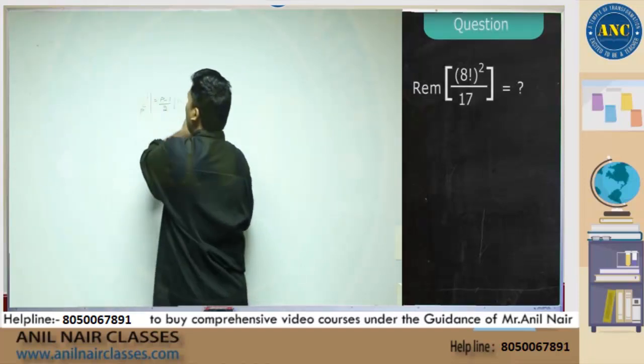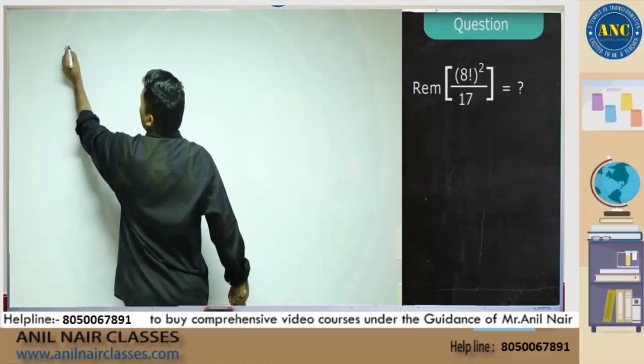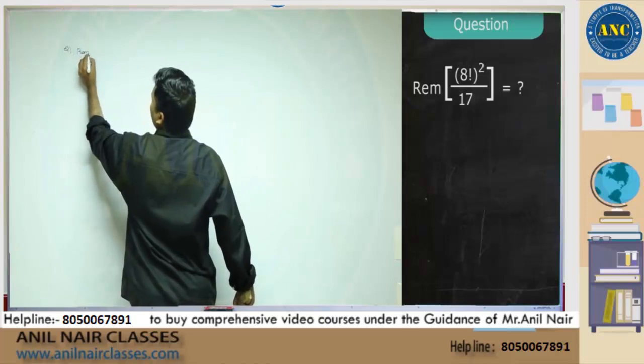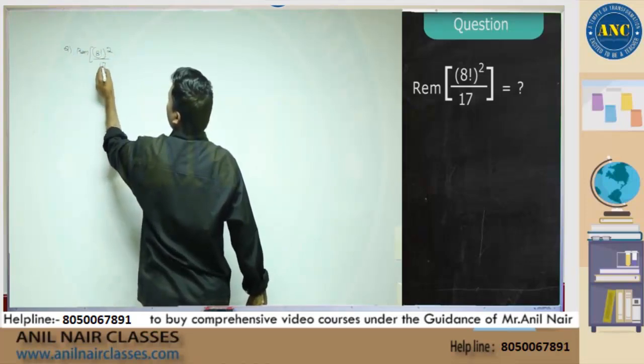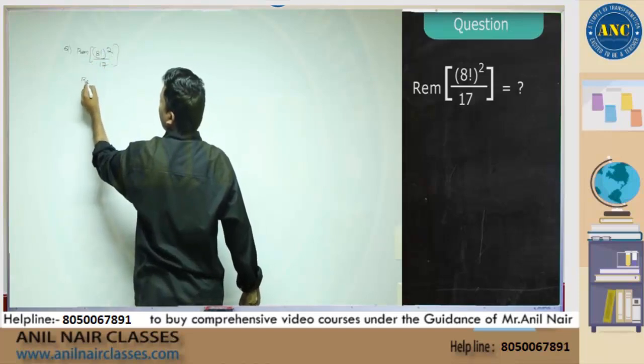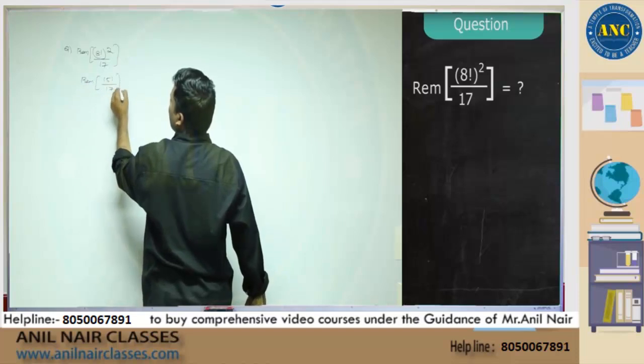8 factorial whole square divided by 17. So, this will be 15 factorial 1 factorial divided by 17 is 1.